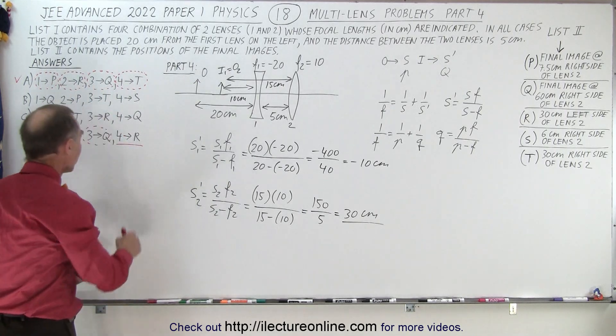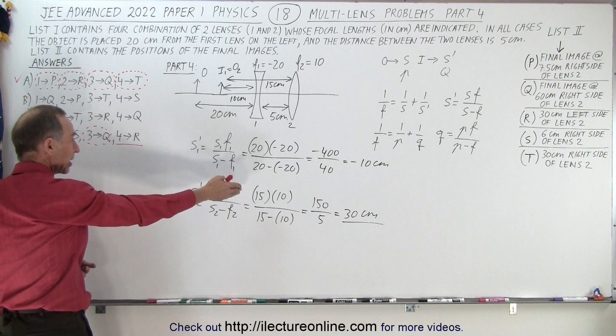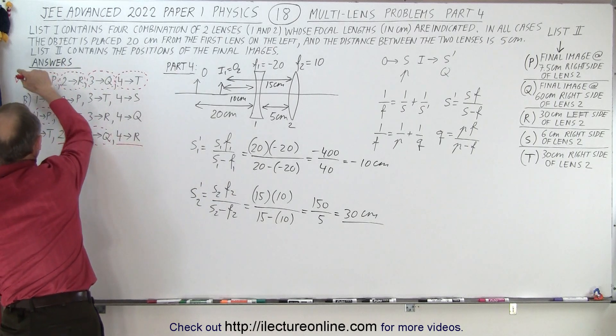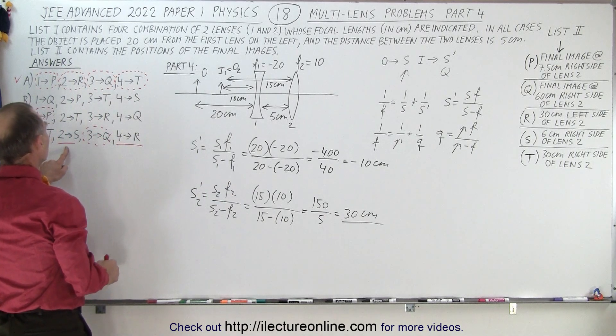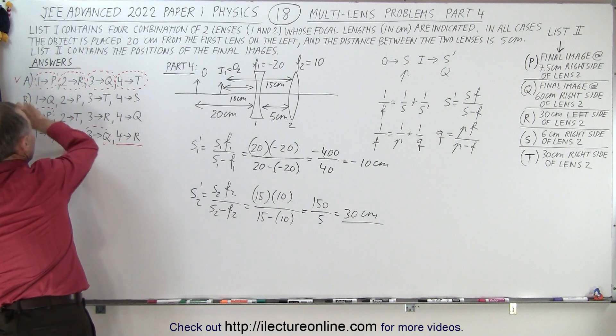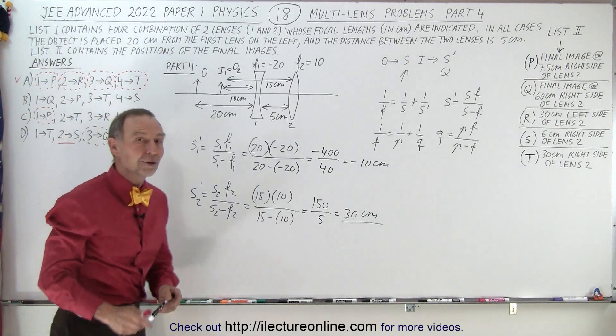But again, we didn't need to do all four. We could have done part four, this one right here. Correct answer means answer A. We could have done part two. Correct answer means answer A. And that way you didn't have to do the other three parts.